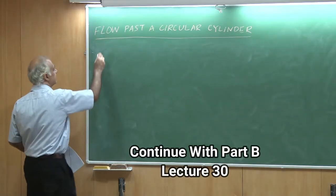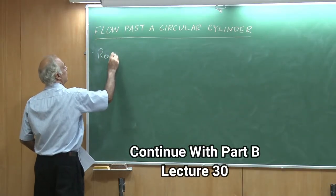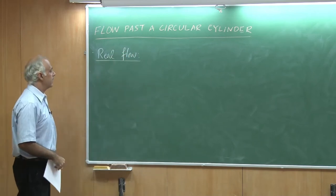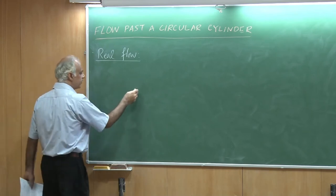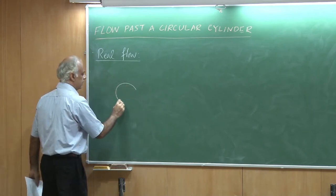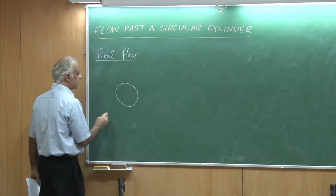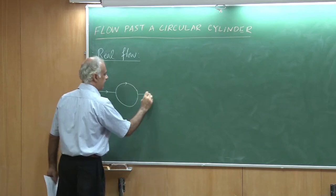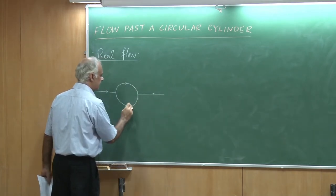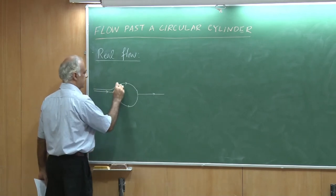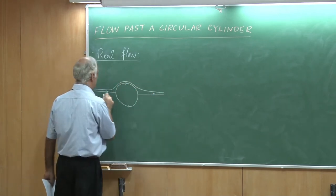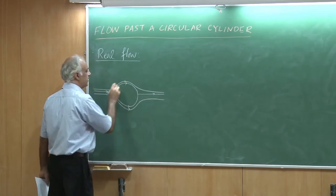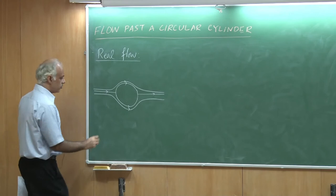We now want to talk about some real effects. Let me review for you what we have seen for the potential flow. This is your circular cylinder — this is the stagnation streamline and it leaves symmetrically. I am going to draw only these very few streamlines. This is potential flow.